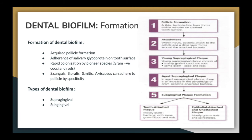How does dental biofilm form? First, there is acquired pellicle formation, followed by adherence of salivary glycoprotein on the tooth surface. Next, there is rapid colonization by pioneer species, usually consisting of gram-positive rods or cocci. Lastly, other bacteria adhere to the pellicle by specificity, such as Streptococcus sanguis, Streptococcus aureus, Streptococcus mitis, and Actinomyces viscosus.